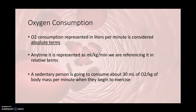Oxygen consumption represented in liters per minute is considered in absolute terms. Anytime it is represented as mLs per kg per minute, we are referencing it in relative terms. Absolute is the exact number — like lifting 50 pounds is an absolute term. But when you put it in comparison to someone's body weight, you put it into relative terms. So if we see oxygen consumption in liters per minute, that's absolute; as mLs per kg per minute, we are making it relative to that person and their size.